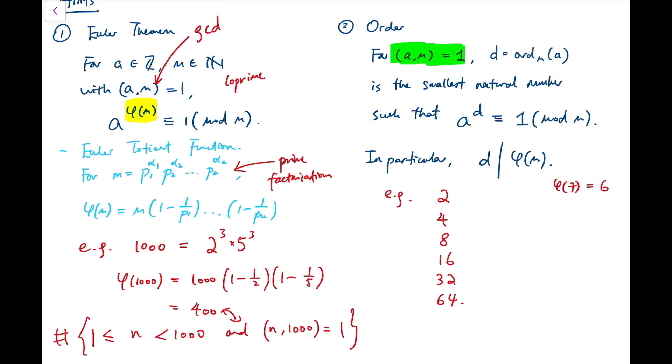But by checking all the powers, we know that actually, this is already congruent to 1 mod 7. So the order for 2 mod 7 is actually not 6, not according to Euler's theorem, but it's actually 3, so it's a smaller number.